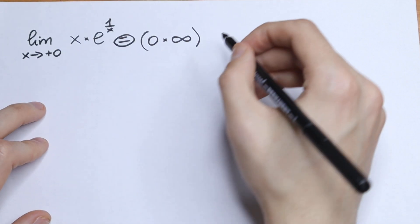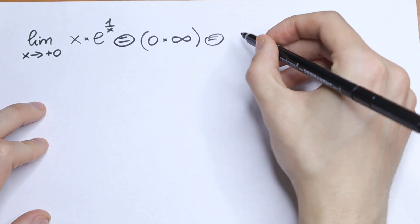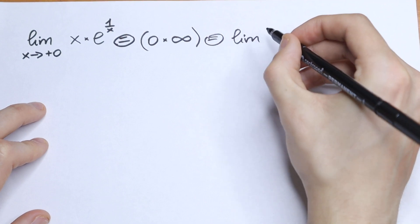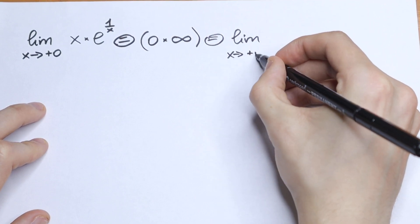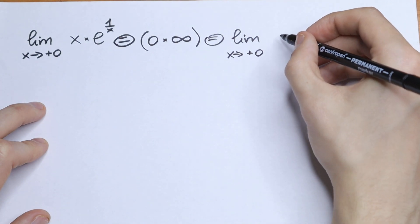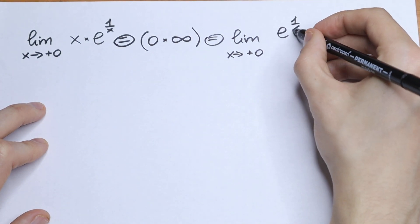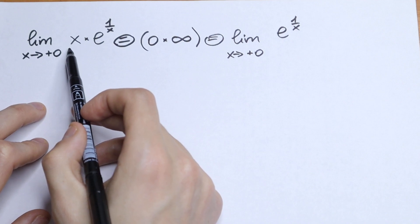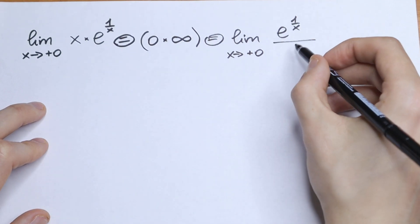So how can we simplify this? First of all I want to suggest a little trick right here. We can write this limit as limit as x approaches 2 plus 0 of the function e to the power 1 over x in our numerator, and let's write this x as 1 over x in our denominator.